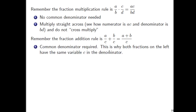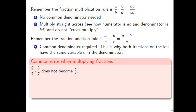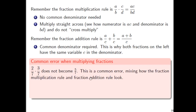You do need a common denominator for fraction addition. That's given away in how the formula is written, because both fractions on the left have the same variable in the denominator — they're both C's. A common error when multiplying fractions: people say things like 2/7 times 3/7 equals 5/7 or 6/7. That's incorrect — it's mixing up the fraction multiplication rule with the fraction addition rule.